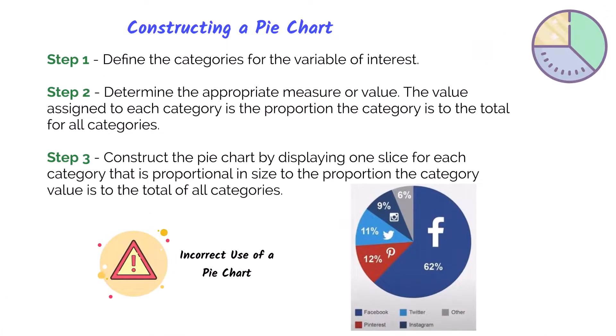To construct the pie chart, the first thing we want to do in step one is to define the categories for our variable of interest. In this example, our variable of interest is social media platforms. The different categories we have are Facebook, Pinterest, Twitter, Instagram, or other. In step two, we want to determine the appropriate measure or value — in this case, the percentage of people using that platform. Then in step three, we'll use Excel to create the pie chart, where each slice represents each category.